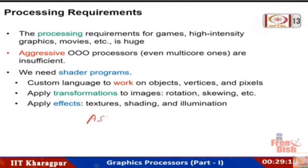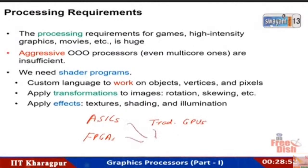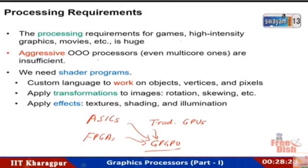ASICs are very good but limited in usage and expensive to create — high startup costs mean they only make sense at large volumes. FPGAs are great for prototyping and a small set of applications. Traditional GPUs are great for graphics. But combining all three — the power of traditional GPUs for graphics, ASICs for computation, and FPGAs' sea of computational units — arrives at the modern general purpose GPU. We will first focus on the graphics aspect of a GPU, then the general purpose aspect.